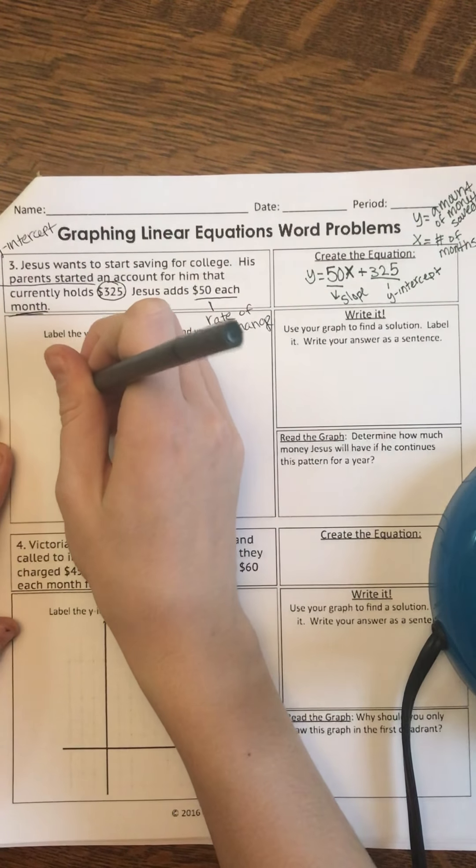And then my slope is 50. So I go up 50 and then over 1 because, remember, slope is Y over X. I rise before I run. So I rise 50 and I go to the right 1. If I'm at 325, up 50 is 375 and then over 1. I'm going to connect that.